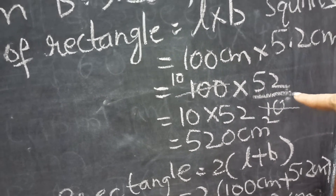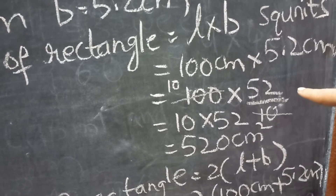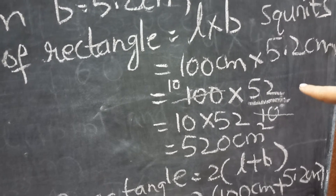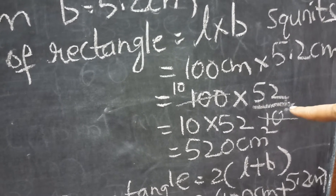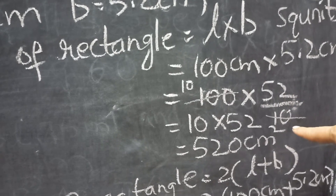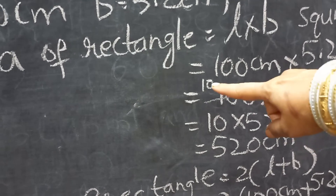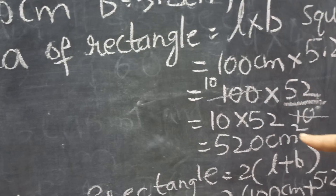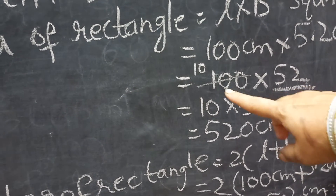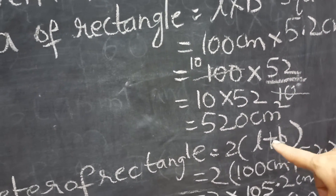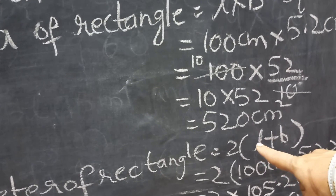We learned decimals and conversion to fraction form — same way done here. So 5.2 becomes 52 by 10. Now in 100, how many times does 10 go? Ten times — cancel. What remains is 10 into 52, which gives five hundred and twenty.